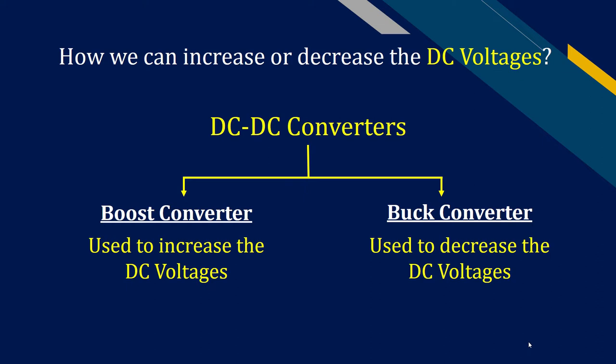To increase or decrease the DC voltages, DC-DC converters are used. The converter that can increase the DC voltages is called boost converter, and the converter that can decrease the DC voltages is called buck converter.